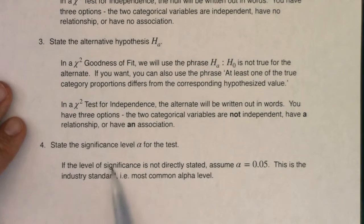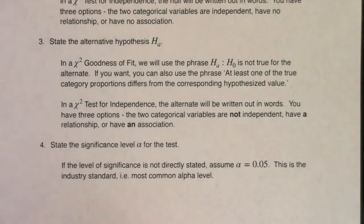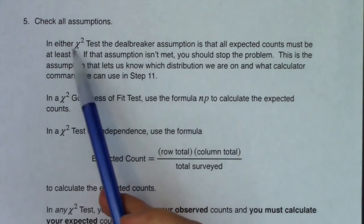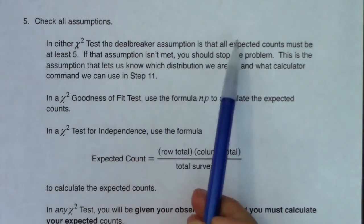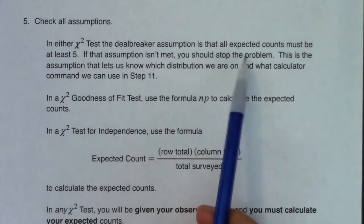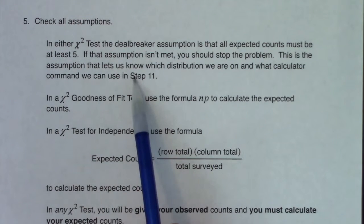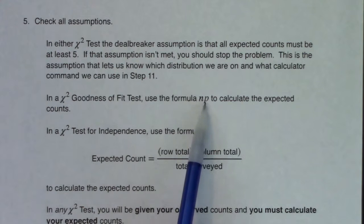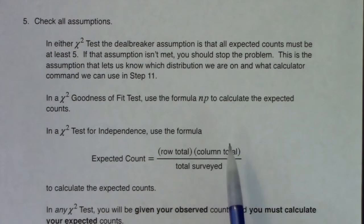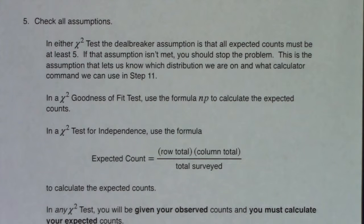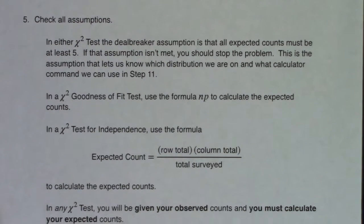Alpha level is always the same — if not stated, default to 5% as the industry standard. For assumptions in either chi-squared test, the deal-breaker is that all expected counts must be at least five. If that assumption isn't met, stop the problem. This assumption determines which distribution and calculator command to use in step 11. For goodness of fit, calculate expected counts using n times p. For the test for independence, use row total times column total over grand total. In any chi-squared test, observed counts are given; you must calculate expected values.